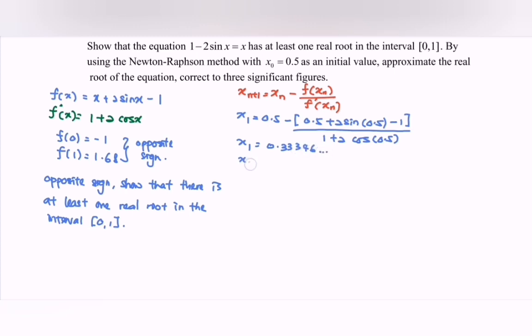Substitute again. x₂ = 0.33346 - [0.33346 + 2sin(0.33346) - 1]/[1 + 2cos(0.33346)]. By referring to the calculator, x₂ = 0.33758.